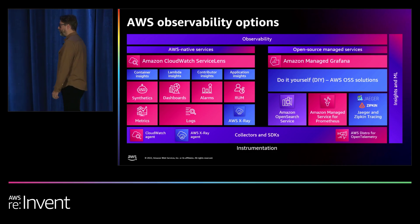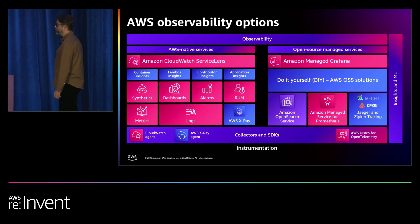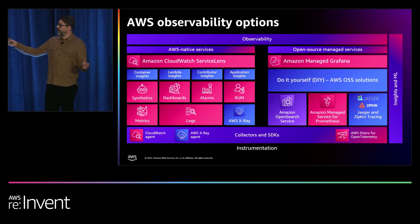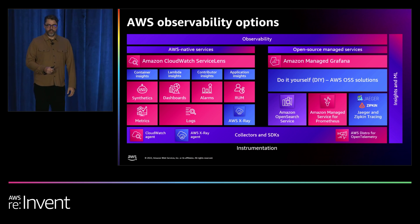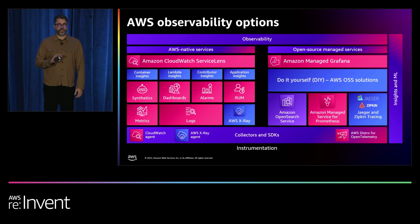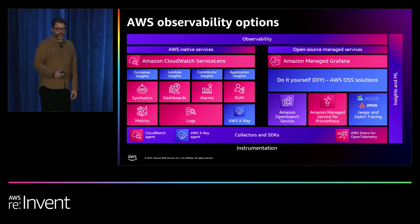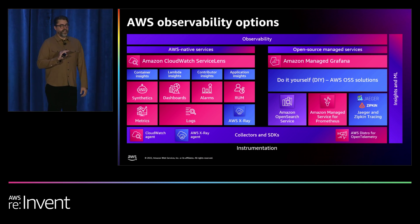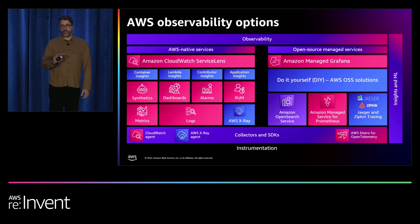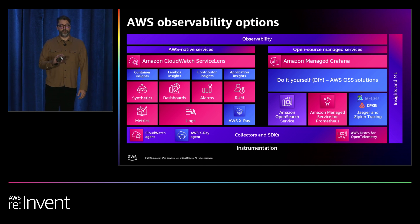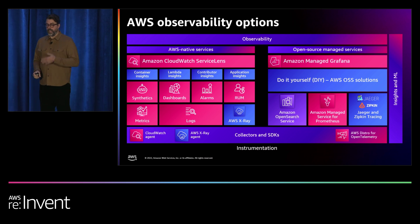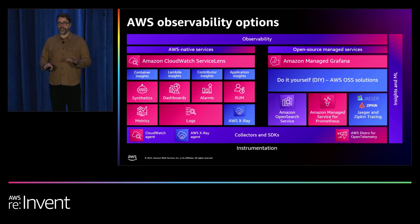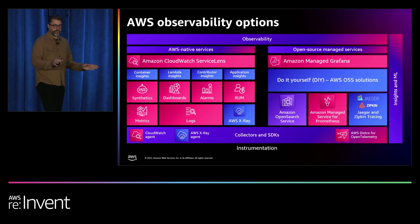AWS provides a couple of things to help you do that. On the left side of the slide is our set of services and solutions related to CloudWatch. CloudWatch is battle-tested — it is used to actually monitor and observe a lot of the services that make up AWS. CloudWatch is a great solution if, for example, you are all-in on AWS: very deeply integrated, very broad coverage.